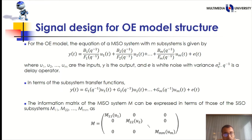The signal design for OE model structure. The below equation for the OE model structure for MISO system with M subsystems. Where U1, U2, Um are the inputs. Y the output. And E is the white noise with variance sigma E squared. Q inverse is a delay operator. Then the below equation is represented in terms of the subsystem transfer function. And finally, last equation represents the information matrix of MISO system M in terms of those of the subsystem M1, M2, Mm. Where the inputs are U1, U2, and Um.